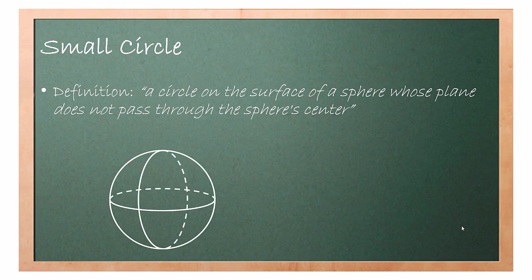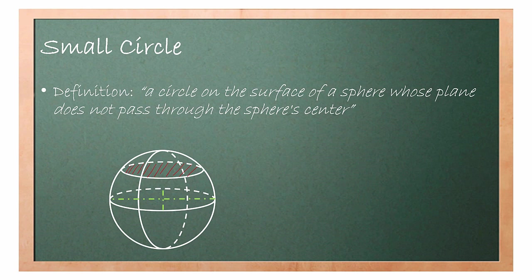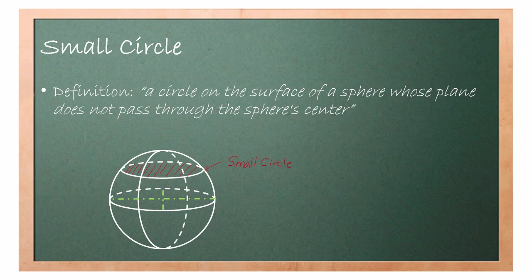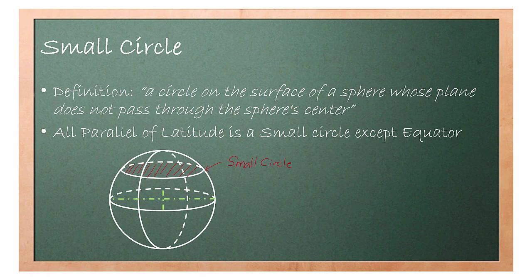This is a sphere; the intersection between the two green lines is the sphere's center. Here is a circle drawn on the surface of the sphere, shaded in red is the plane of the circle. As you can see from the diagram, the plane of the circle does not cut through the center of the sphere. The second fact to remember about small circles: all parallels of latitude are small circles.